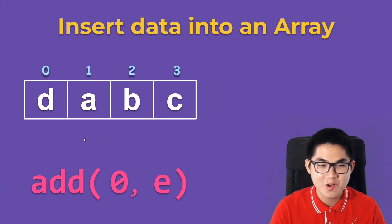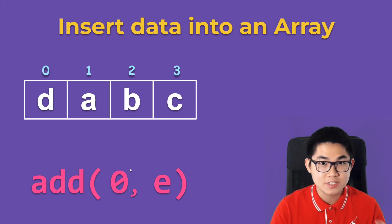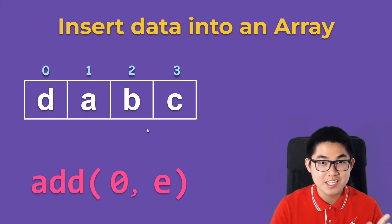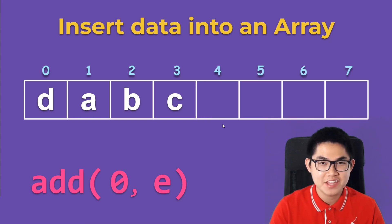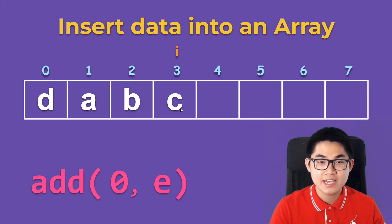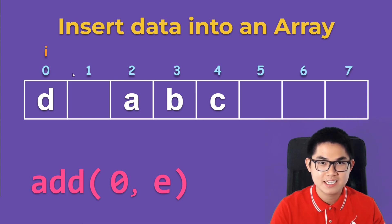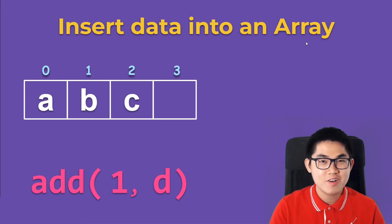Now let's insert the letter E at the beginning of this array at index zero. The first step is to check for space: there are four letters and four squares, so four equals four — there's no more space. What we can do is double the length of the array. Then we put the iterator at the last letter, shift all elements right, and once index zero is available, we insert E.